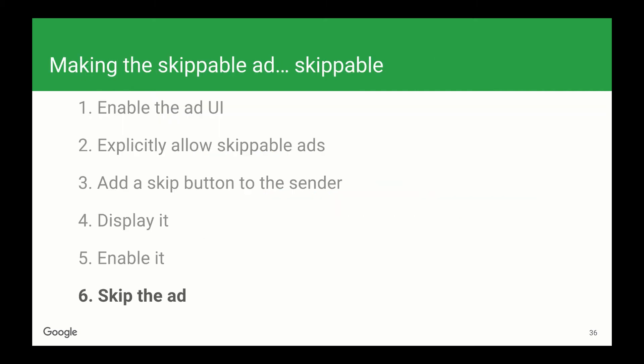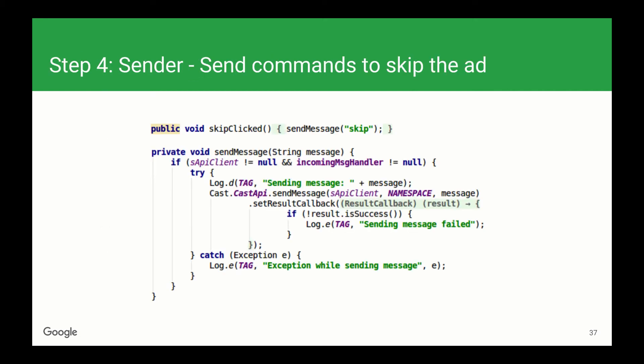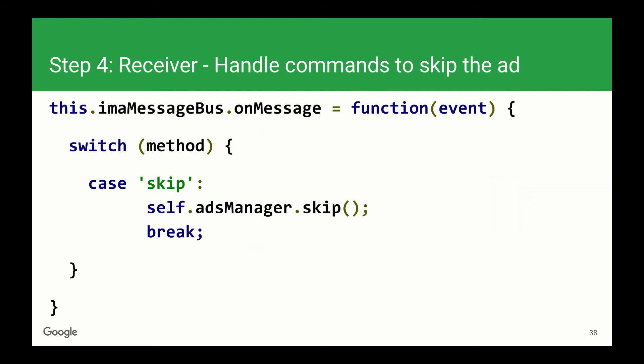Now that we have the skip button enabled, we need to implement the skip functionality. To do this, we'll start on the sender — we'll add a tap listener to the button, and when that's triggered, we'll fire the skip message to the receiver. Then on the receiver, we'll listen for this message and call adsManager.skip() in response. This method will only work when an ad is in a skippable state. If you call it on a non-skippable ad, or on a skippable ad whose skip button is still disabled, it will be a no-op.